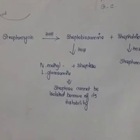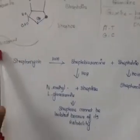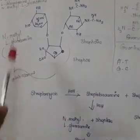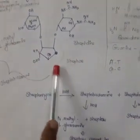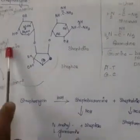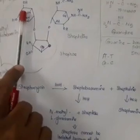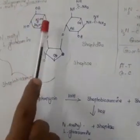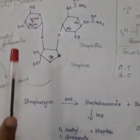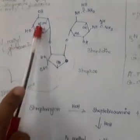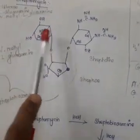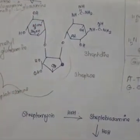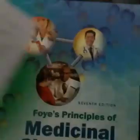To summarize streptomycin: it has two parts — streptobiosamine and streptodin. Streptobiosamine contains N-methyl-L-glucosamine and streptose. It is called N-methyl-L-glucosamine because glucose with NH2 is glucosamine, and replacing H on nitrogen with methyl gives N-methyl-L-glucosamine.